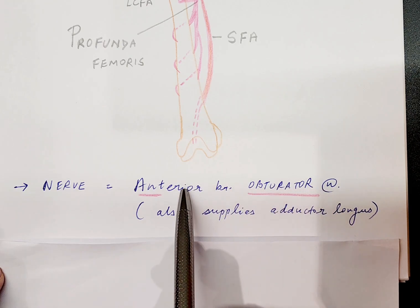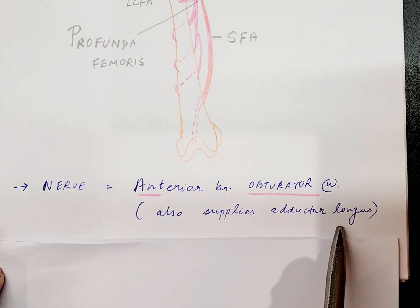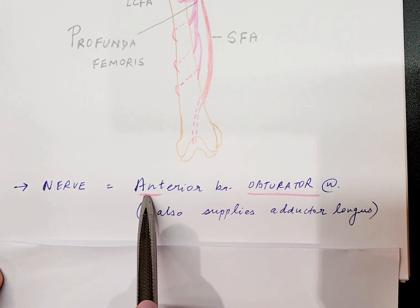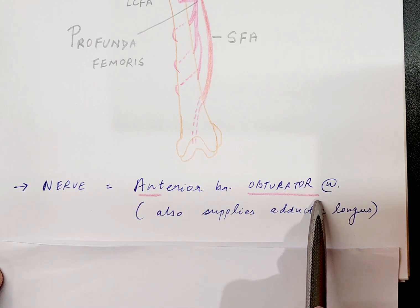The posterior branch of the obturator nerve will supply the adductor magnus and other muscles, but for us, the gracilis is supplied by the anterior branch of the obturator nerve.